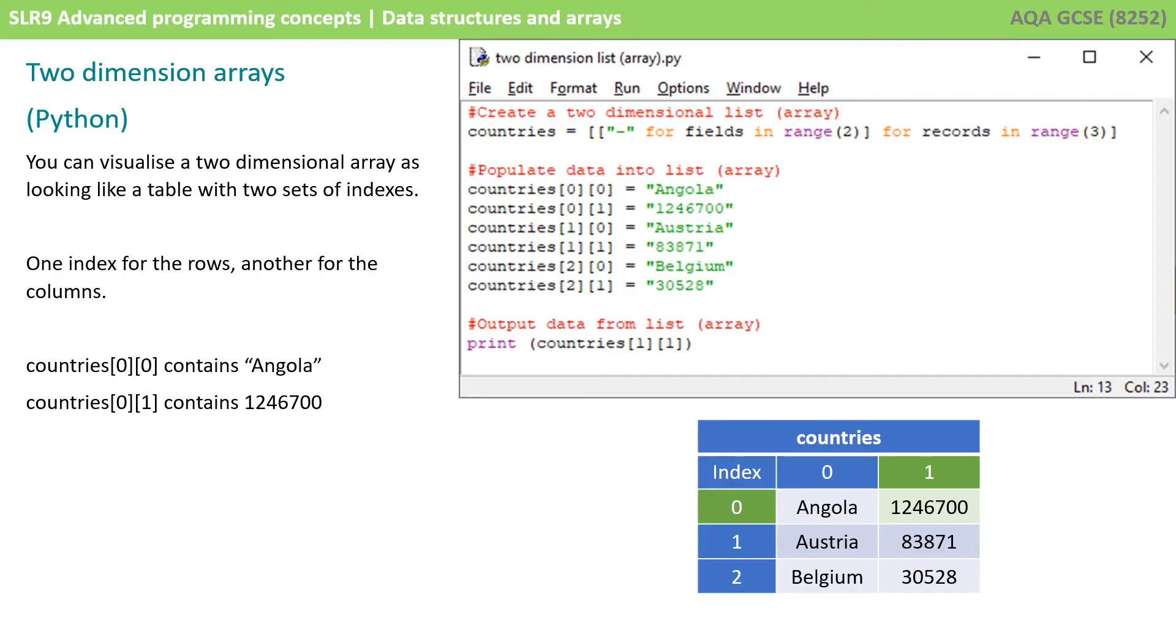Countries 0, 1 contains the integer 1,246,700. Countries 1, 1 contains the value 83,871.